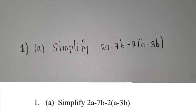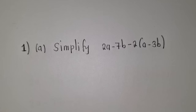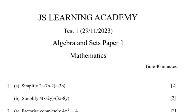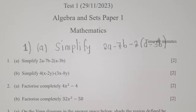Alright, so this is question 1a: simplify 2a minus 7b minus 2a minus 3b inside the brackets. If you've been following my postings, this is a test for November. Our online students wrote this test and the solutions for all these questions will be put in this video. Please watch the video up to the end.